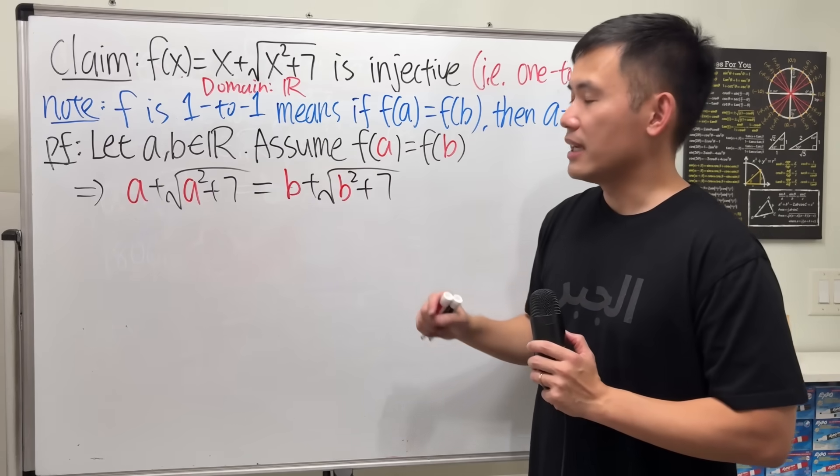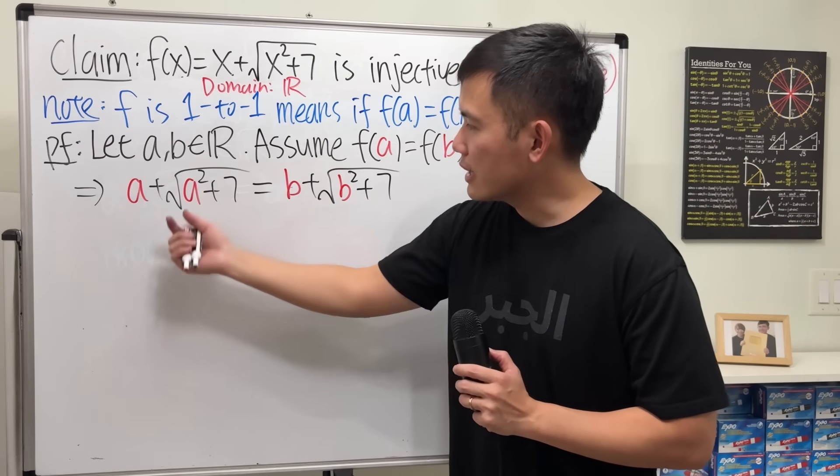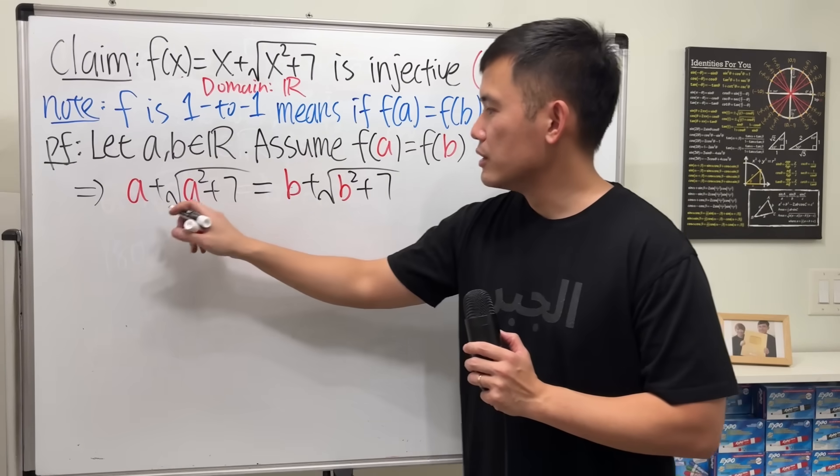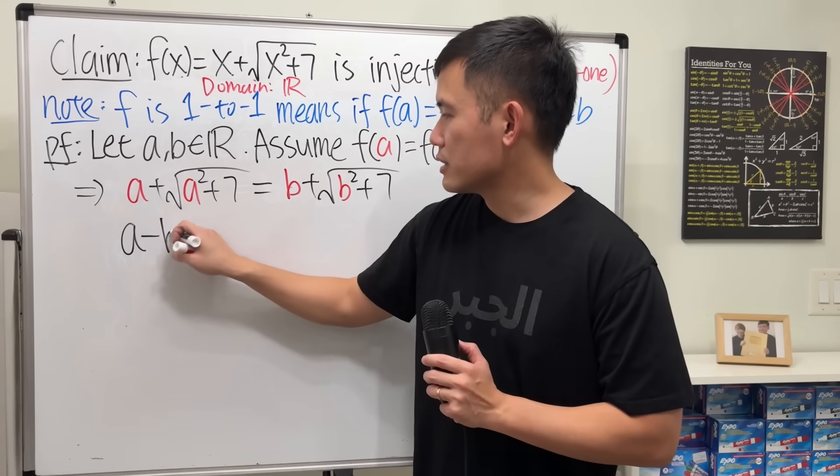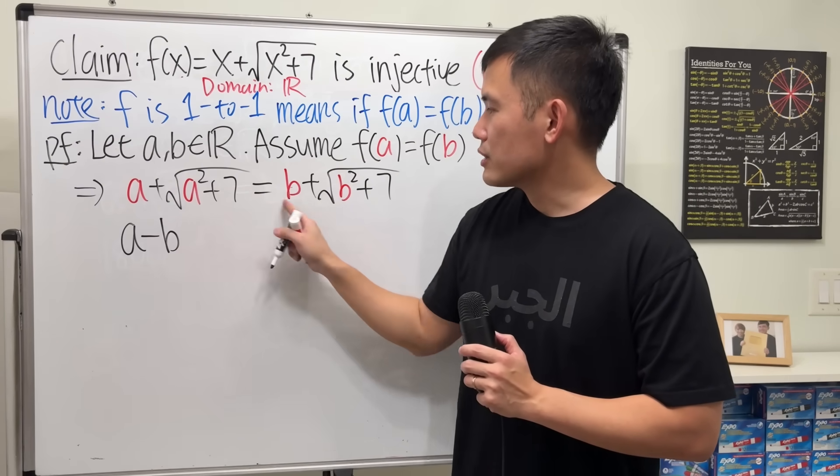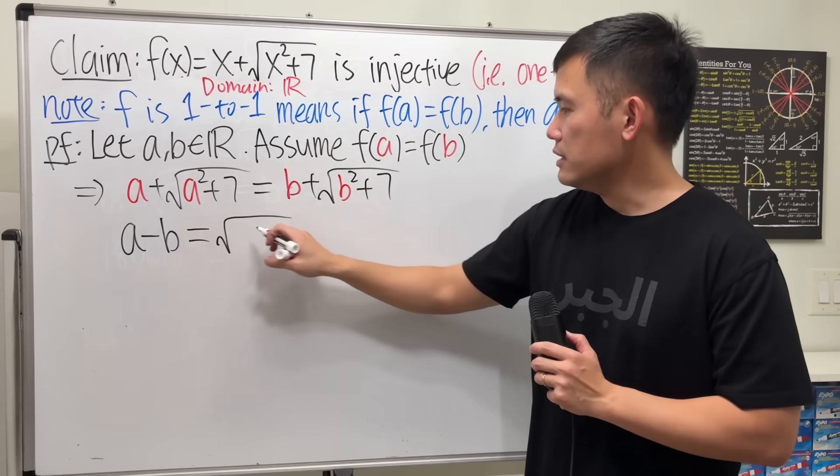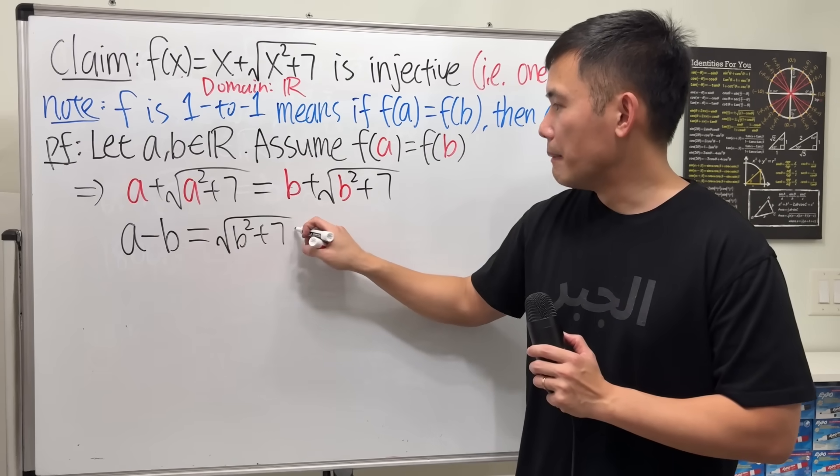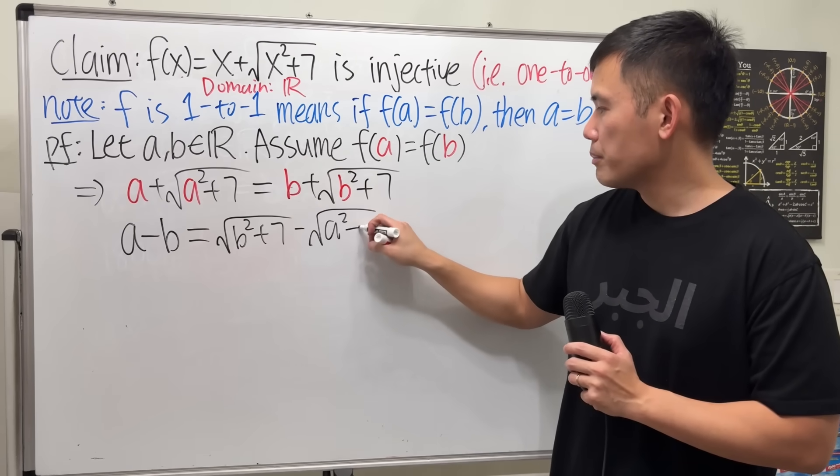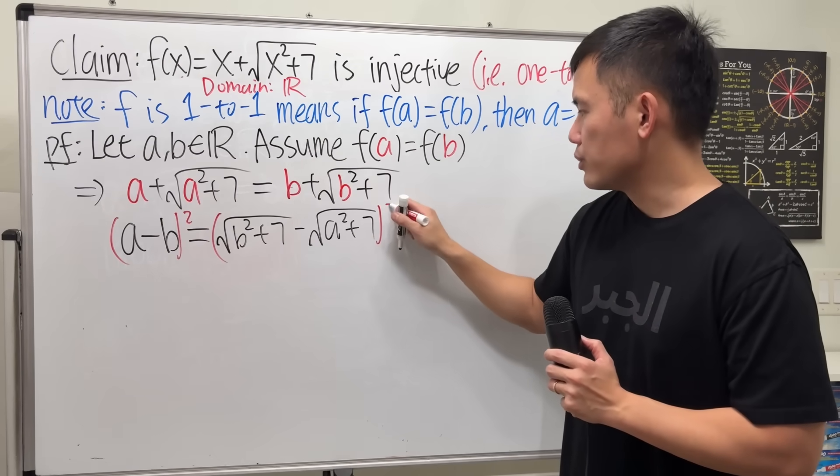I'm not going to square both sides like this. I'm going to move things around first. I'm going to put b to the other side and put this term to the other side. So subtract b to both sides and then put that to the other. So we have a minus b equals square root of b squared plus 7 minus square root of a squared plus 7. And then I will square both sides because I want to get rid of the square root.